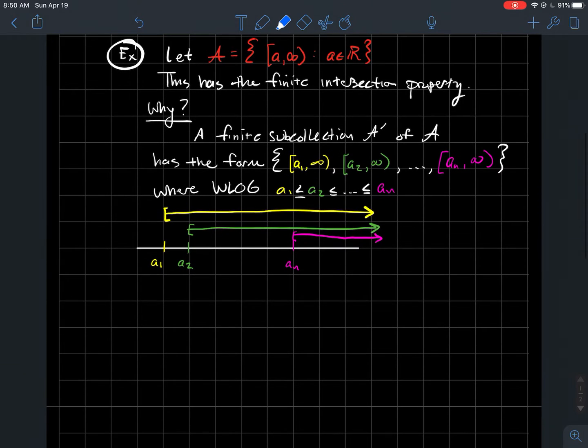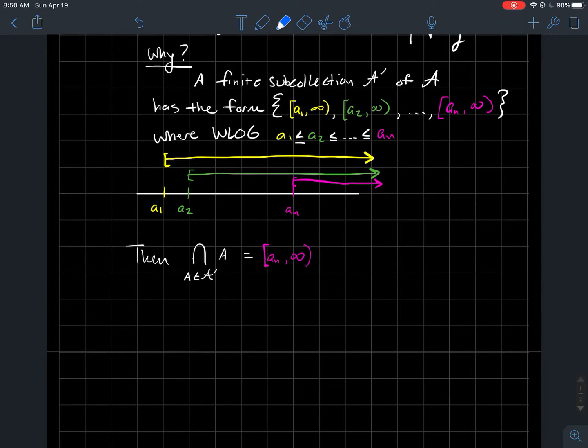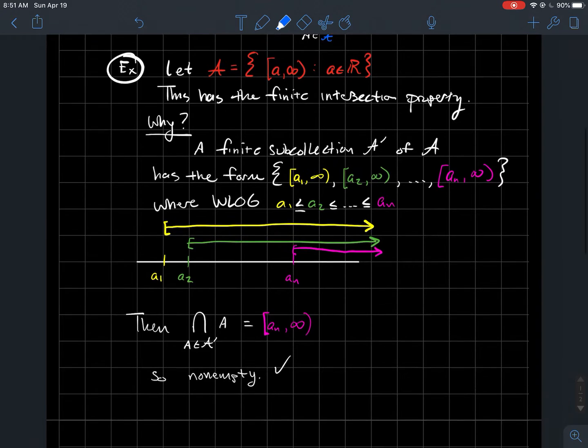What would the intersection be? The points contained in all of these intervals would be exactly the pink right there. If any finite subcollection has to look like that, we can always use this argument to conclude that the intersection of finitely many of these sets has to be non-empty. Therefore, that is why this collection has the finite intersection property.